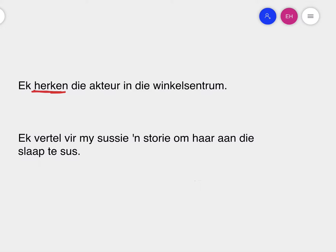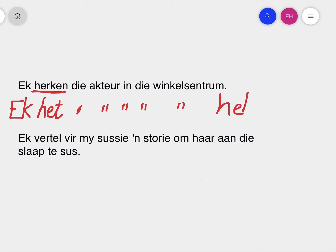As we may know already, you make the past tense by adding 'het' and 'ge' to the verb. In the case of the be, ge, her, er, ont, ver, mis rule, you still have the 'het' because that indicates your past tense. Everything else in the sentence stays exactly in the same place, but there is no 'ge'. So: 'ek het die akteur in die winkelsentrum herken.' No 'ge' with these words.